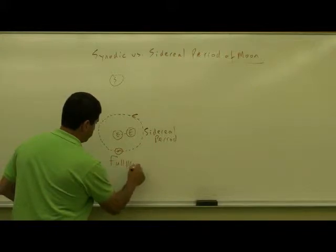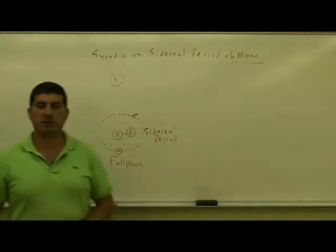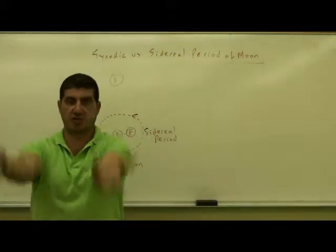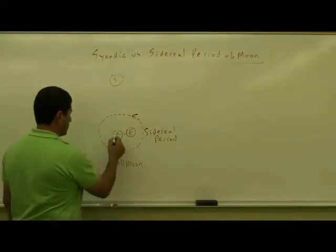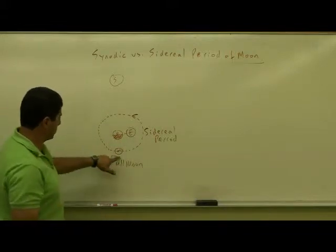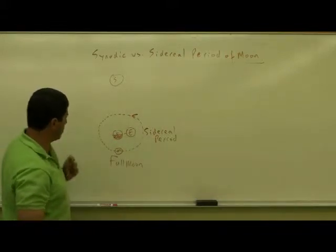This is full Moon. That means the people on the nighttime side of Earth will be able to see the Moon. So this is the nighttime side of the Earth. They'll be able to see the Moon because the Moon is opposite to the Sun.